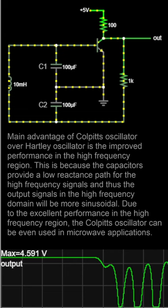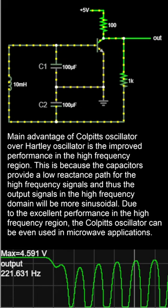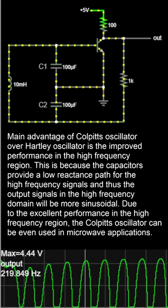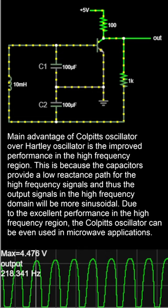The transistor amplifies this oscillation and prevents it from dying out. The transistor cannot conduct until C1 is charged to about 680 millivolts. When the transistor is off, the output is around 4.5 volts. Current from the 1K resistor and the inductor charges C2.